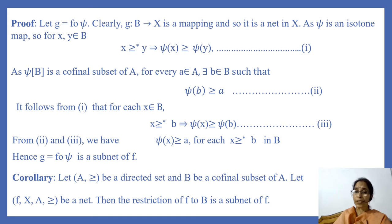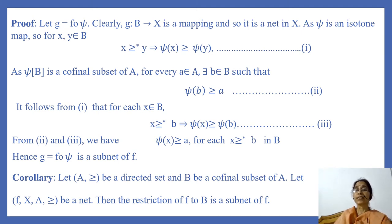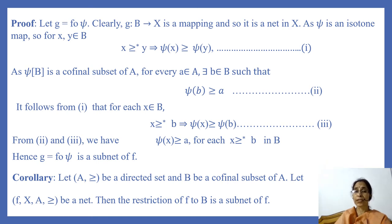From condition (1), it follows that for each x in B, x ≥* b implies ψ(x) ≥ ψ(b). And from conditions (2) and (3), ψ(x) ≥ a for each x ≥* b in B. That means the second condition is also satisfied for G to be a subnet of net F. And so we can say that G is a subnet of F.